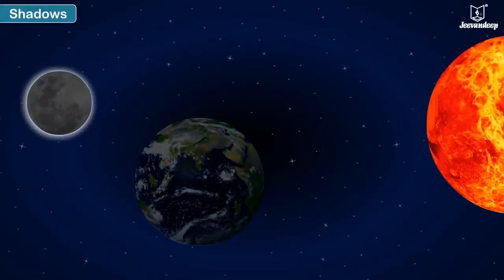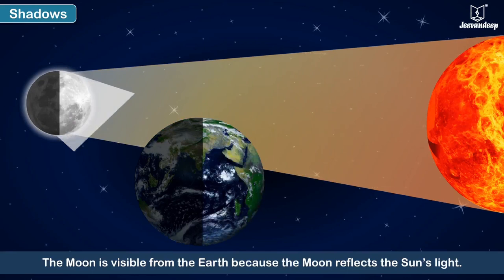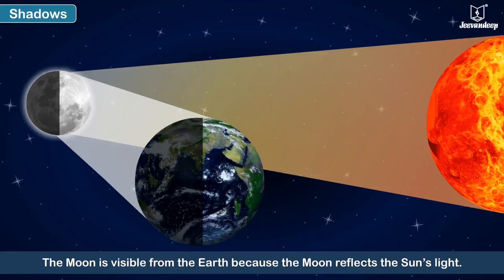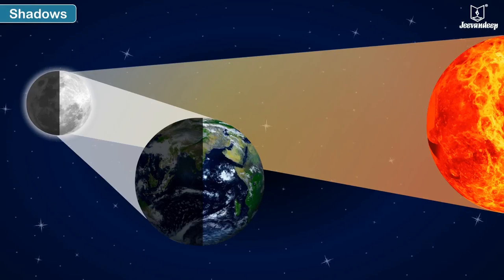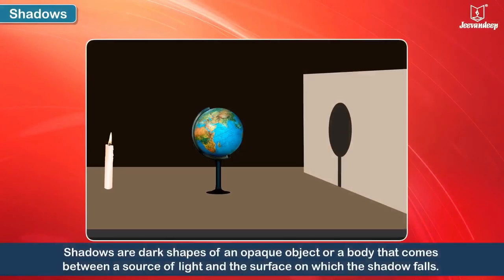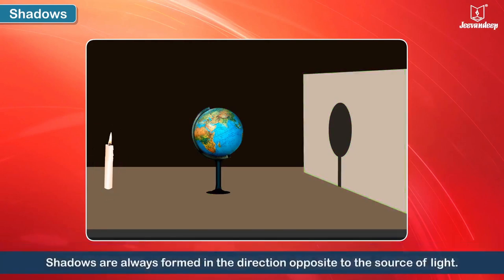Shadows. We have learnt that the Moon is visible from the Earth because the Moon reflects the Sun's light. Shadows are dark shapes of an opaque object or a body that comes between a source of light and the surface on which the shadow falls. Shadows are always formed in the direction opposite to the source of light.